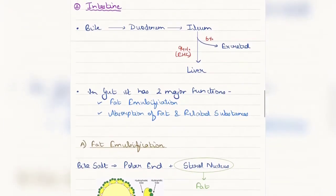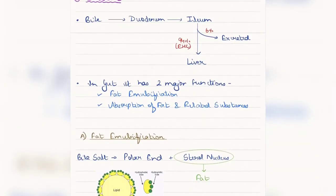Next, coming to the intestine. In the intestine, bile reaches the duodenum from where it goes to the ileum. Now, the bile that is present in the ileum—not all of it is reabsorbed into the portal circulation. 94% of the bile in ileum is reabsorbed into the portal circulation and goes to the liver, whereas 6% of it is excreted into the fecal matter.